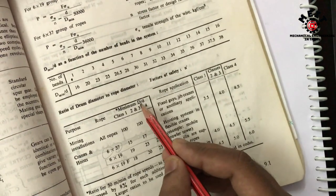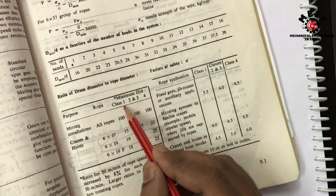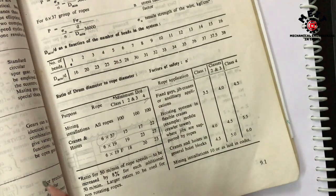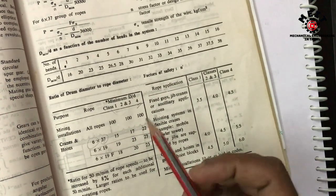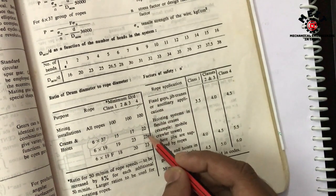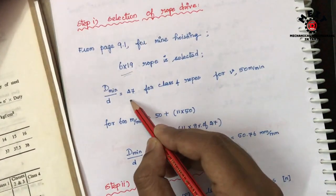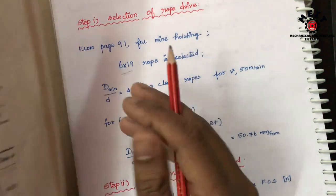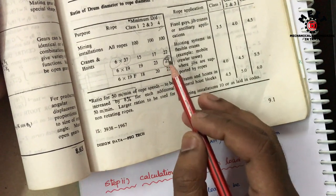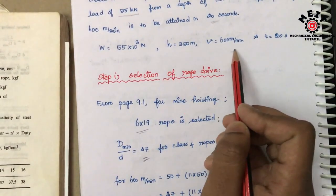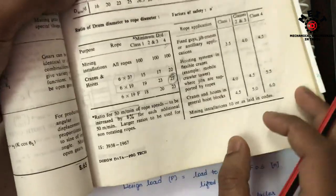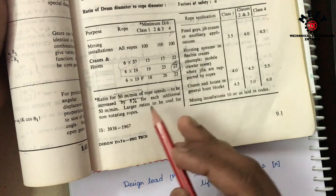Then D minimum by d ratio: Class 1 to 4. Class 1, Class 2, Class 3, Class 4 — Class 4 is the high safety rope. So we can go with Class 4. For Class 4, the D by d ratio is 27. The table mentions 50 meters per minute as the reference speed value, and our required speed is 600 meters per minute, so we need to adjust this value.